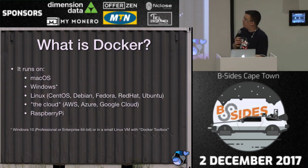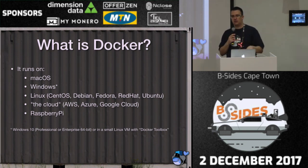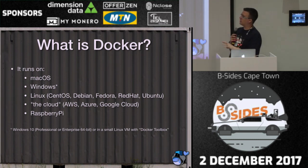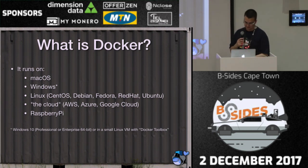Docker runs pretty much everywhere these days — Mac OS, Windows, Linux, the cloud, even Raspberry Pis, which I found quite interesting. There are client and server aspects, so mileage varies depending on what you're doing. But ultimately, the Docker client at the very least should run almost anywhere, allowing you to connect to a Docker host, start, stop, and view containers.